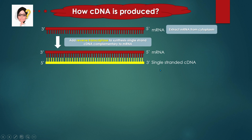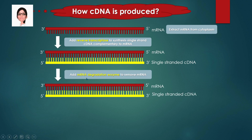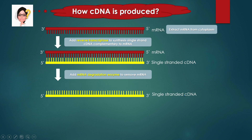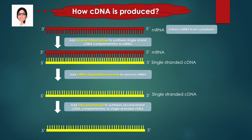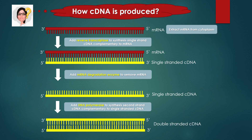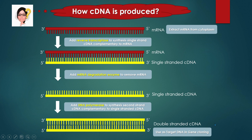Since a DNA molecule should contain DNA strands only, we have to remove the mRNA strand. An mRNA degradation enzyme is used to remove the mRNA. Now, the single-stranded cDNA is used as a template to synthesize a second-stranded cDNA using DNA polymerase, which synthesizes the second strand complementary to the single-stranded cDNA. The result is double-stranded cDNA, which is used as the target DNA in gene cloning.